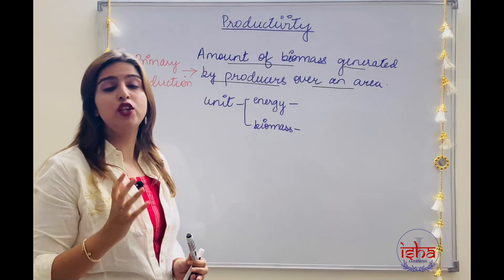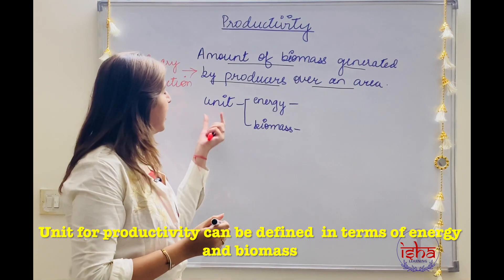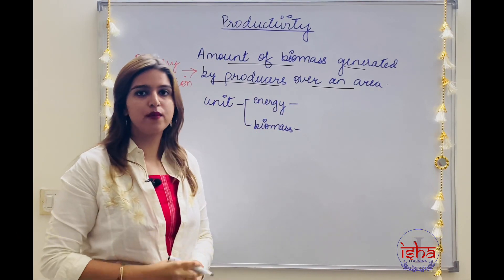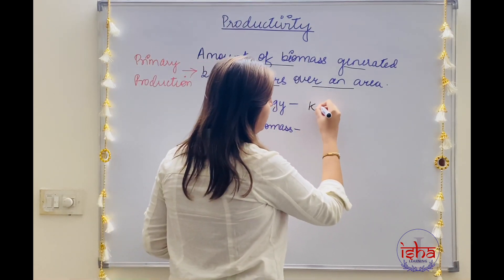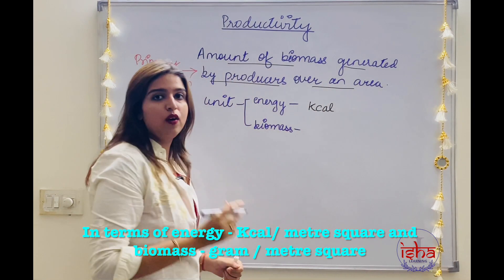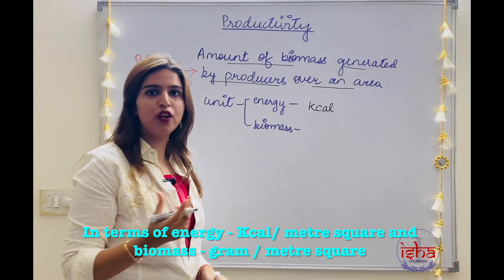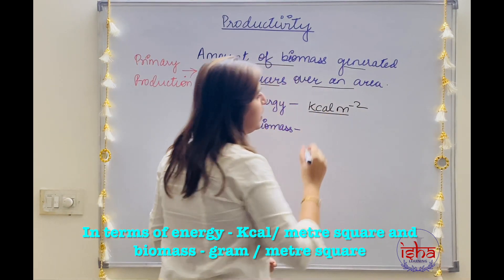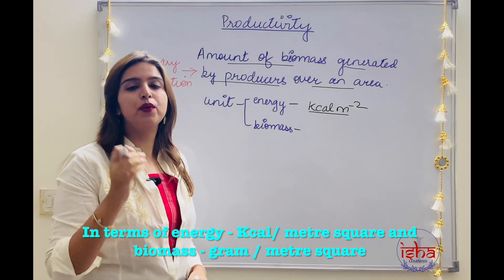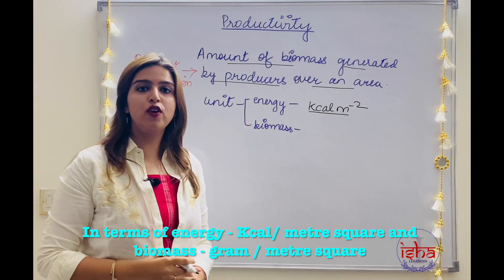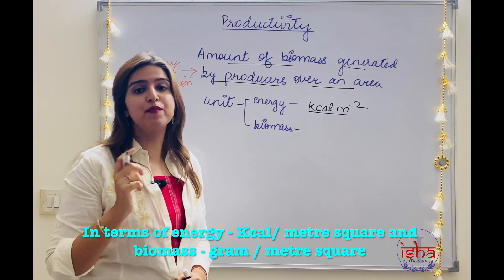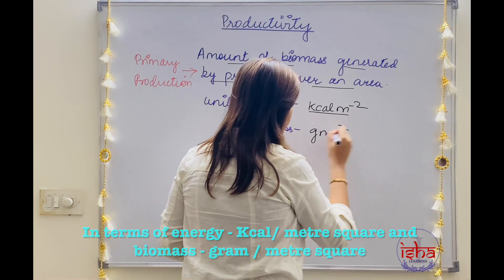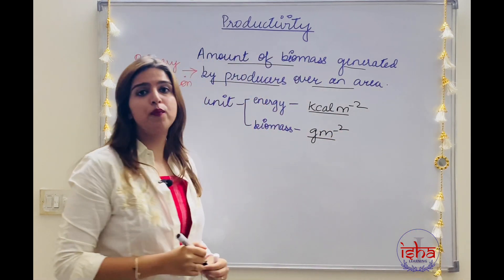Now if I try to give a unit for primary production, I can define it in terms of energy or in terms of biomass. In terms of energy, it is the energy generated per meter squared. In terms of biomass, it is grams per meter squared. These are the units for primary production.